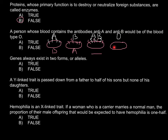As for blood group O, in the serum we would have antibodies A and B present. That's why this blood group is a universal donor but can be a recipient only from its own blood group and none of the other three blood groups. And now we can answer this statement — blood group O does have antibodies A and B present, so the answer is true.